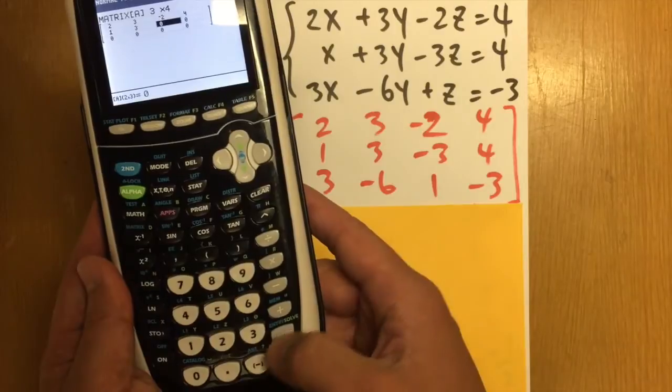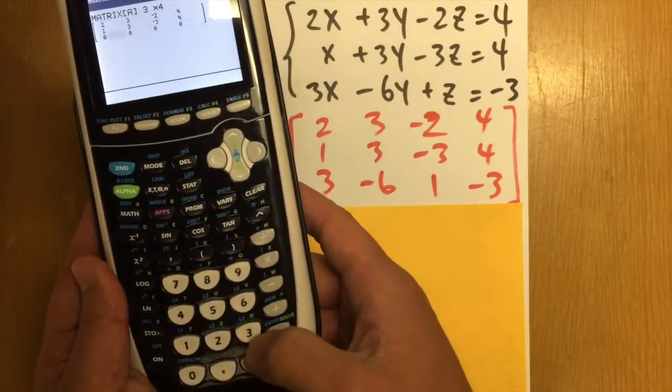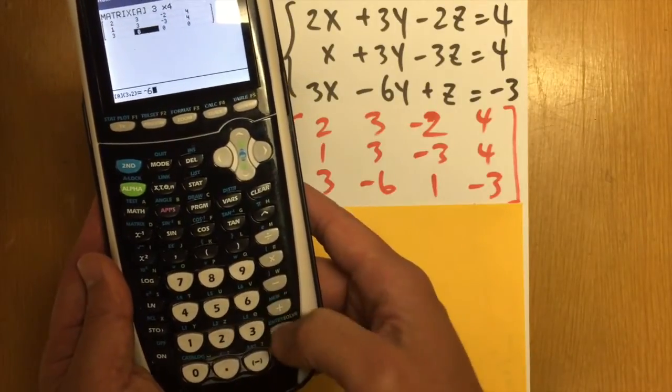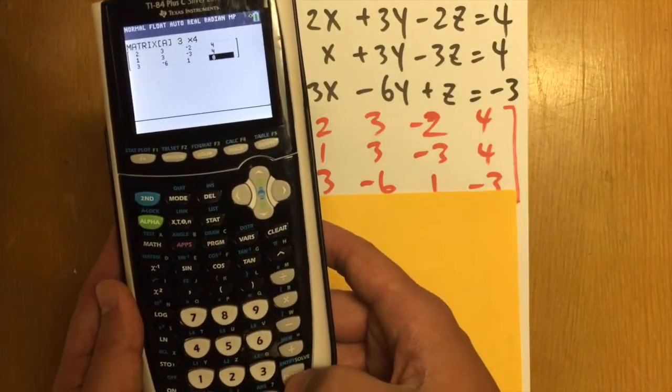And then we're just going to continue. We have the 1, 3, negative 3, and 4, and then 3, negative 6, 1, and negative 3.